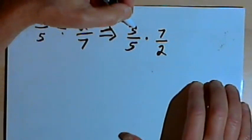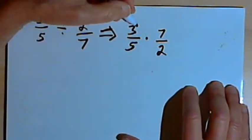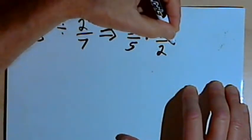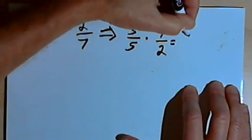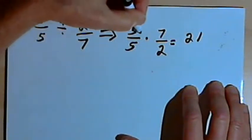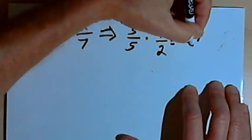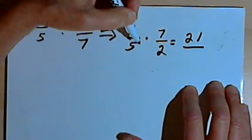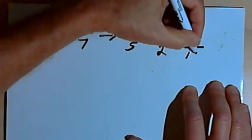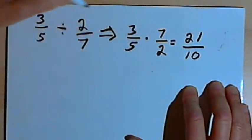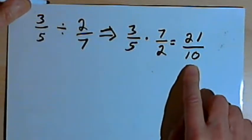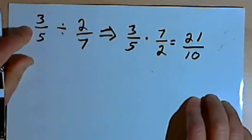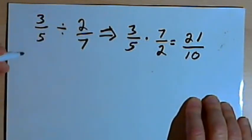Then all I have to do to multiply two fractions is multiply the numerator times the numerator to get the new numerator. So 3 times 7 is 21. And I multiply the denominator times the denominator to get the new denominator. And 5 times 2 is 10. So the answer to this problem is going to be 21 over 10. Now what I want to do is show why this method works.